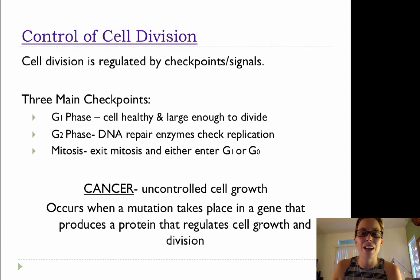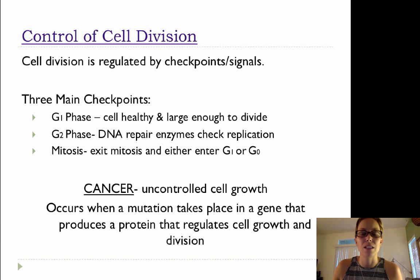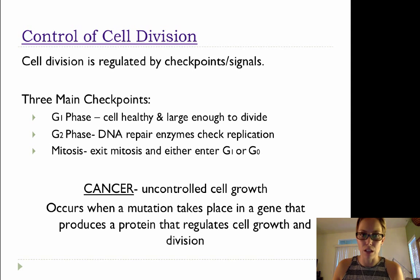There are three main checkpoints where the cell pauses to make sure it's ready to proceed with the next step. The first is G1: is the cell healthy enough, is it large enough to divide? There are signals going on there where the cell checks itself to make sure it's healthy and ready to proceed with DNA replication or synthesis.